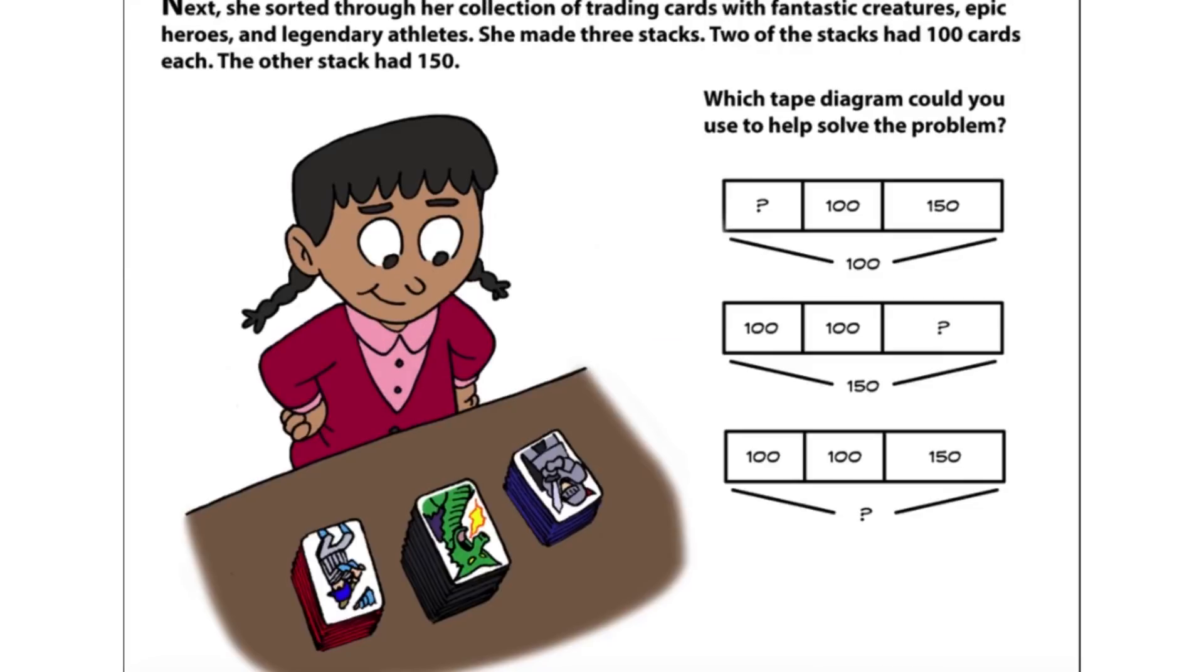Next, she sorted through her collection of trading cards with fantastic creatures, epic heroes, and legendary athletes. She made three stacks. Two of the stacks had 100 cards each. The other stack had 150. Which tape diagram could you use to help solve the problem?